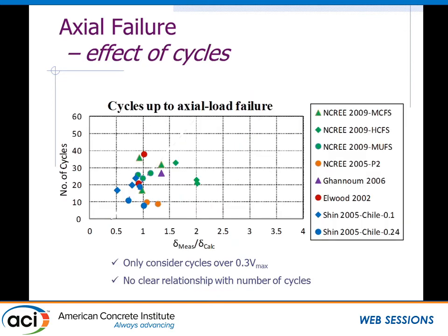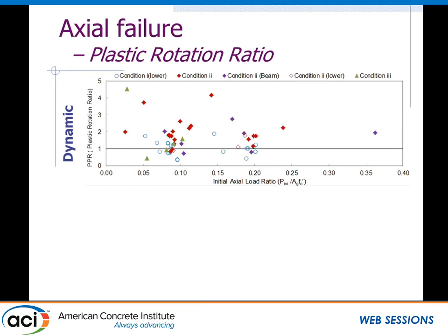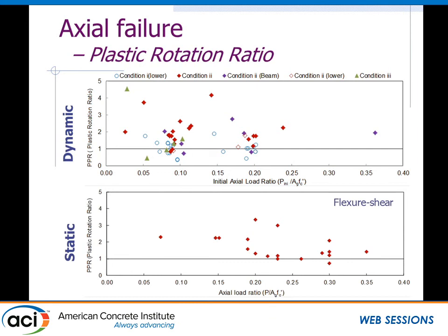Looking at the effect of cycles on axial failure, again it's difficult to see a trend with the number of cycles. I think this is somewhere the data set may be able to provide future study. For the plastic rotation ratio at axial failure — focusing on the red dots, which are the flexure-shear failures going all the way to axial failure — ASCE 41 again seems conservative, as almost all values line up above one. Comparing to the static dataset, as Wasim noted, there is a much smaller dataset available for axial failure, but it too is conservative.